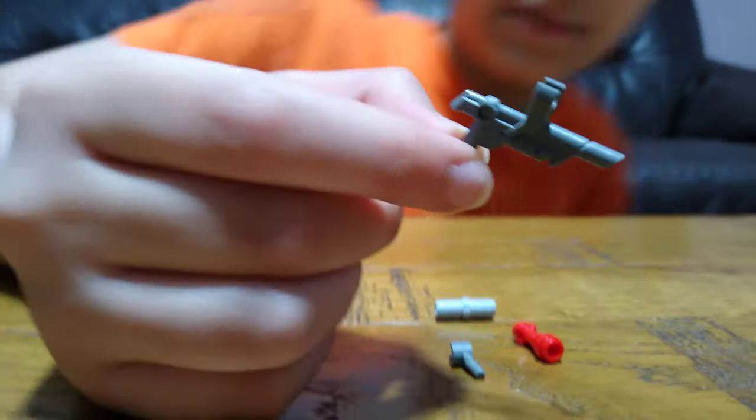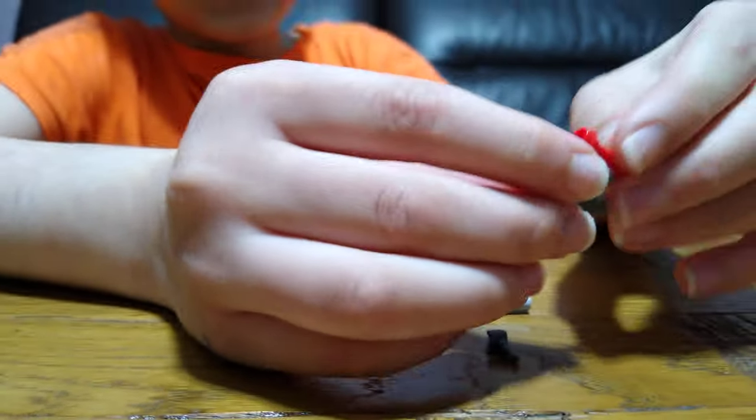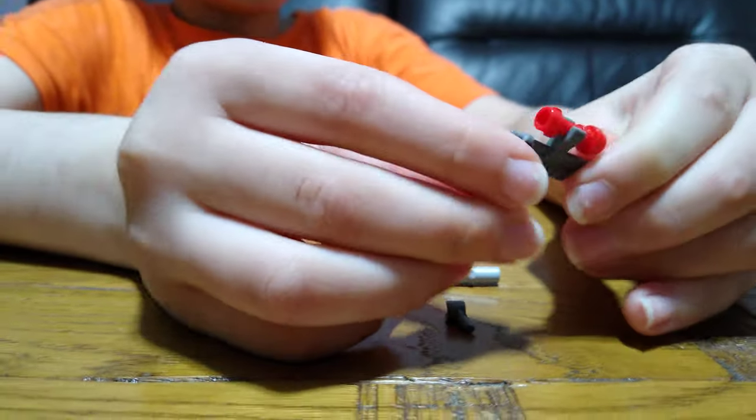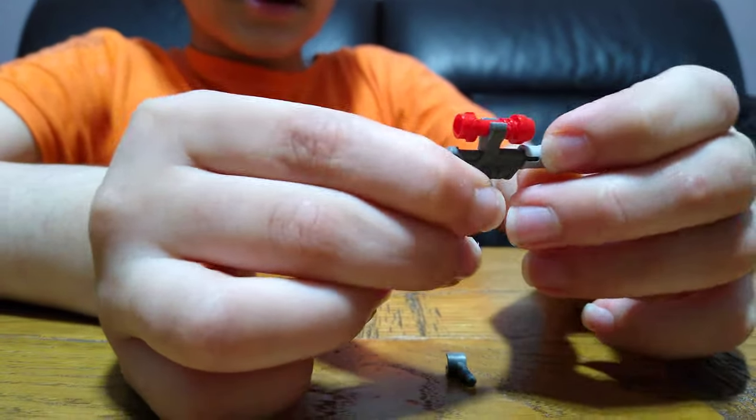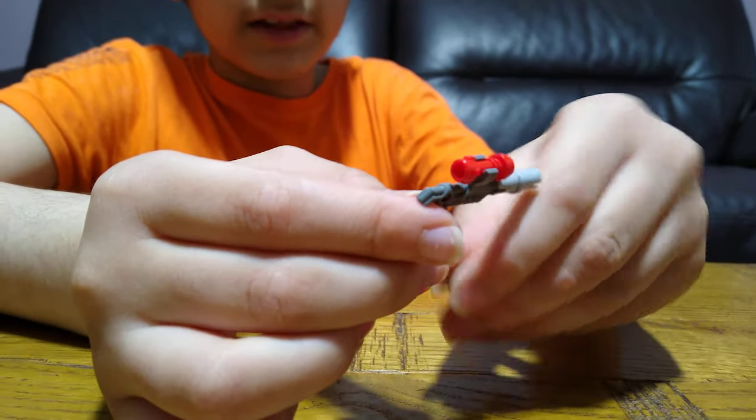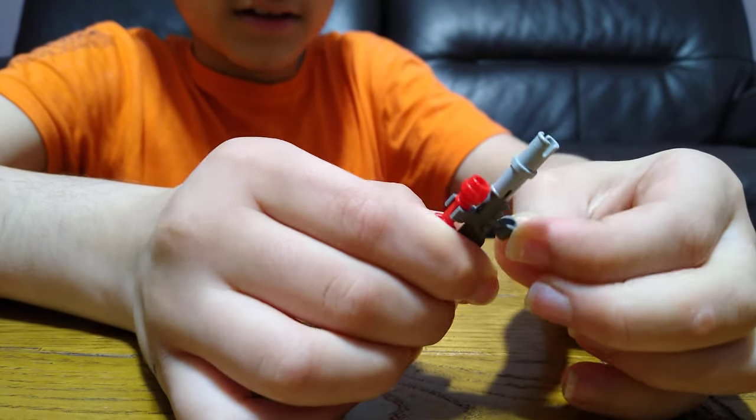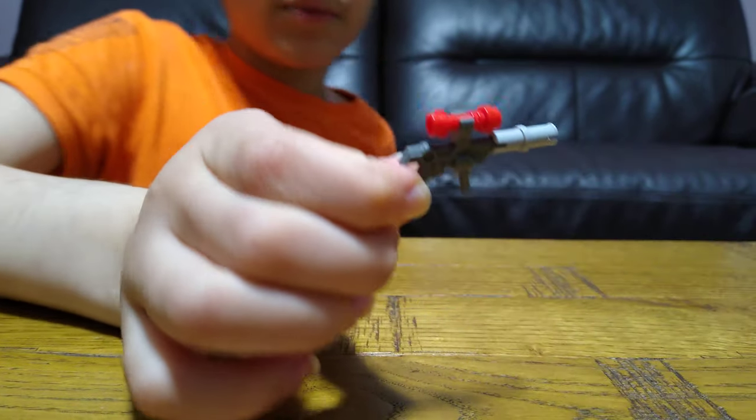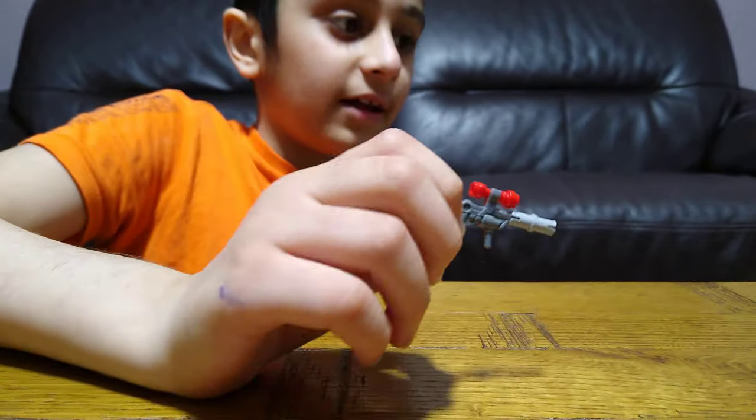Next we are going to build this one. You might have already seen this in other videos. So first you get the sniper piece, put this tube for the binocular, and then put this technic pin at the front and then this minifigure hand like that.